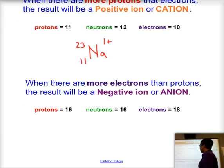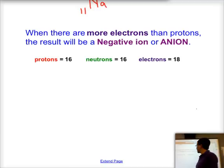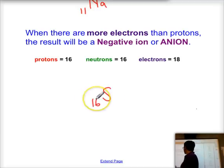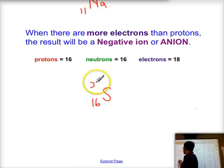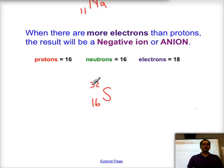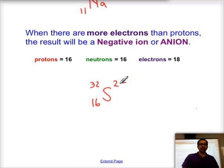If you have more electrons than protons, you get a negative ion called an anion. Here we have 16 protons, which is sulfur. With 16 neutrons, the mass number is 32. With 18 electrons, the charge is 16 minus 18 which equals negative two. We write this as 2−, giving us what is called the sulfide ion.